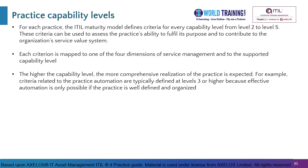Each criterion is mapped to one of the four dimensions of service management and to the supported capability level. The higher the capability level — between 1 and 5 — the more comprehensive the realization of the practice expected. For example, criteria related to practice automation are typically defined at Level 3 or higher, because effective automation is only possible if the practice is well defined and organized. There are some practices, not the ITAM practice, where automation can occur at Level 2, but in general automation happens at Level 3 and above — and that is the case for ITAM as well.